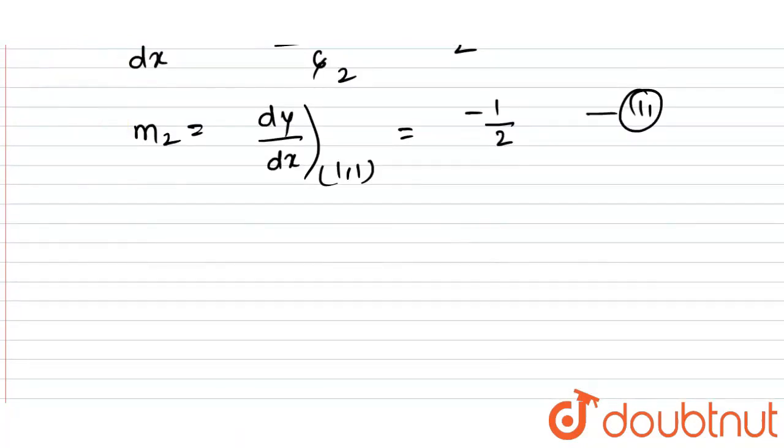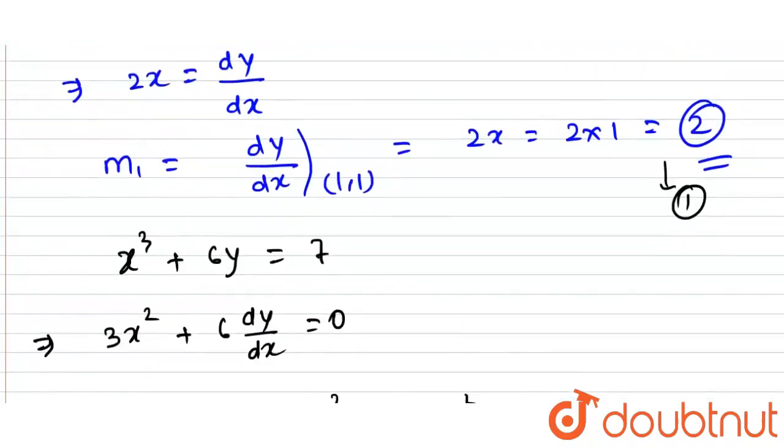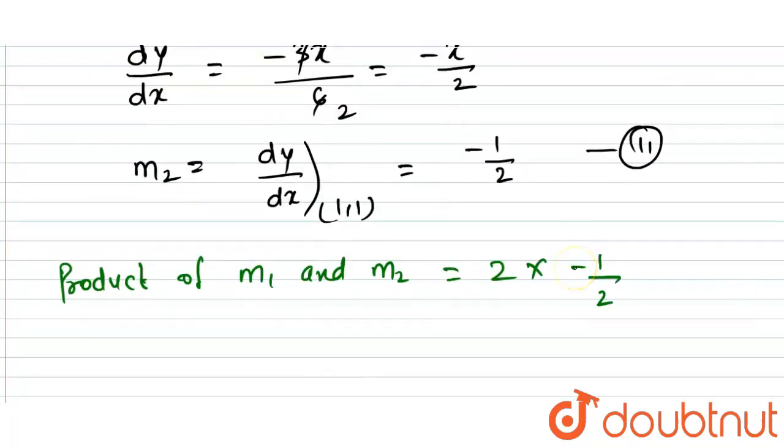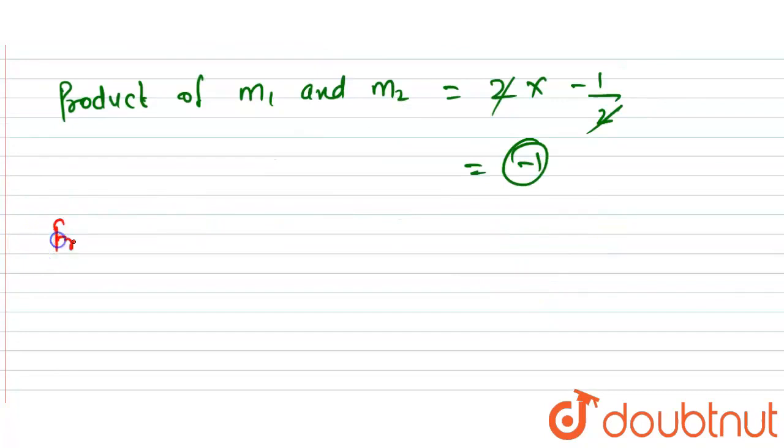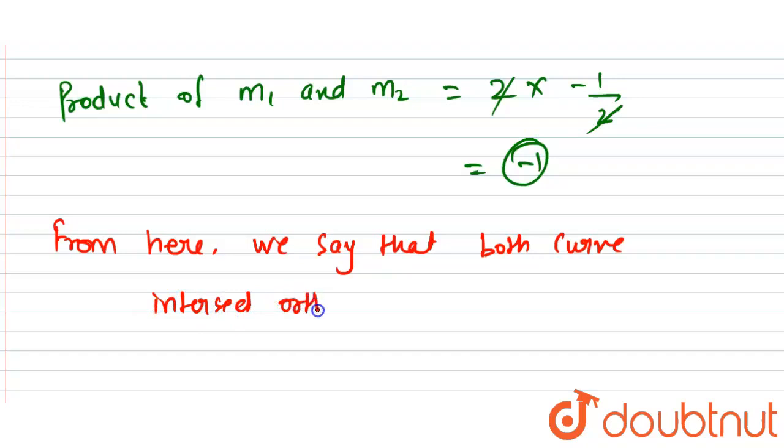Now, what is the product of their slopes? Product of m1 and m2. This equals what is m1? m1 is 2. And m2 is minus 1 by 2. This equals minus 1. From here, we can conclude that both curves intersect orthogonally at (1,1). Thank you.